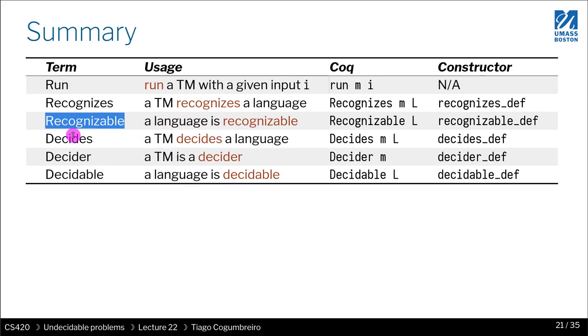Then we have the notion of decides where a machine decides a language. Decider, a machine is a decider. And decidable is the language. The language is decidable by some machine. So in summary, these are all the things that we've learned in this chapter.